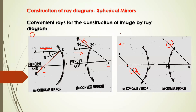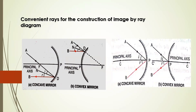So we finish with the first and the second rule. The third convenient ray we can consider is one which is passing through the focus. The incident ray passing through the focus hits the surface at the point of incidence, and after reflection, it passes parallel to the principal axis in case of a concave mirror. In case of a convex mirror, a ray directed towards the focus will appear to diverge parallel to the principal axis after reflection.